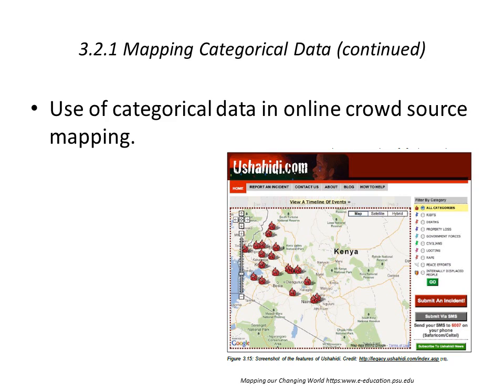Here's an example of crowdsource mapping where categories are being symbolized on a map. In this case, it relates to elections in Kenya in 2008 in response to various incidents being reported. Individuals report them on their phones, it gets aggregated, classified, and symbolized on a crowdsource map.